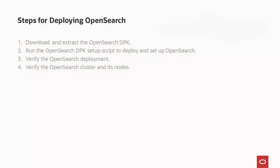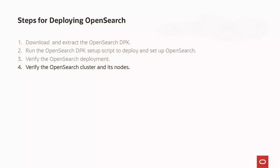The high-level steps for deploying OpenSearch are as follows. Step 1: Download and extract the OpenSearch DPK. Step 2: Run the DPK setup script to deploy and set up OpenSearch. Step 3: Verify the OpenSearch deployment. Step 4: Verify the OpenSearch cluster and its nodes.